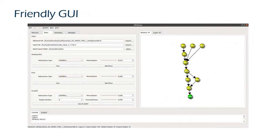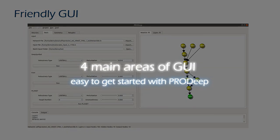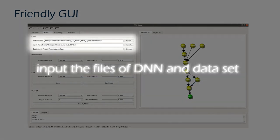Here is the GUI of PRODeep. We divide the interface into four main areas to keep the tool easy to use. The upper left part of the interface is the input box for the network files and input files.